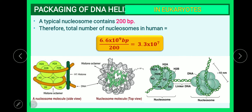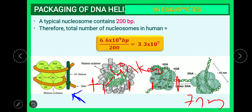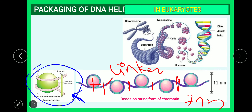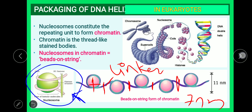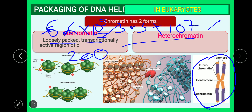Draw the nucleosome model diagram and explain the nucleosome model of DNA packaging. Also define and distinguish euchromatin and heterochromatin. In the next class, we will discuss a very interesting experiment that proves DNA as the genetic material.